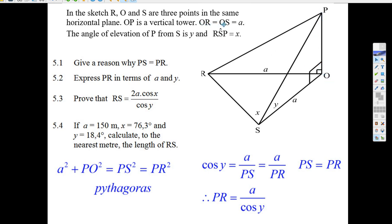OR equals OS, which equals A. These lines in the bottom are equal to A, and the angle of elevation right here from P, the angle of elevation to P from S here, that bending up there in this right angle triangle here is Y.